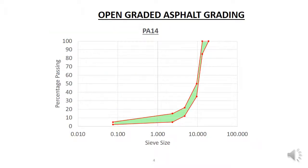This graph shows the grading envelope of a PA14 mix. The envelope is the same as that for an SMA14 mix, which is the stone mastic asphalt mix covered in the previous video. The curve shows an aggregate with a high proportion of coarse aggregates, hardly any coarse sand, and quite a bit of fine aggregate — that is, a gap graded aggregate to provide the voids required to make the mix porous. Notably, this grading envelope is the same as that for stone mastic asphalt, but open graded asphalt is porous while stone mastic asphalt is not — it is impermeable.